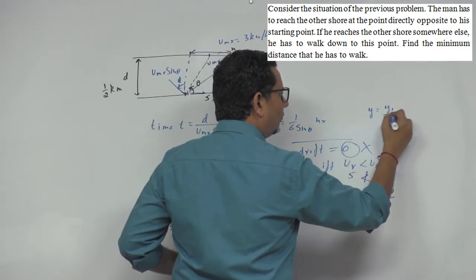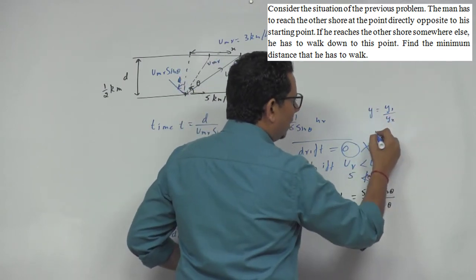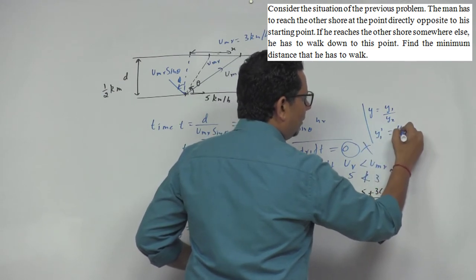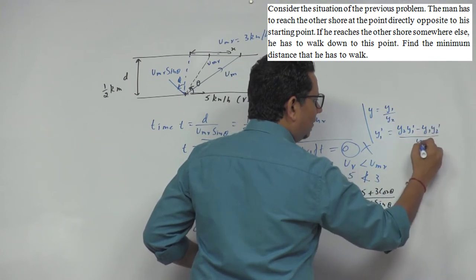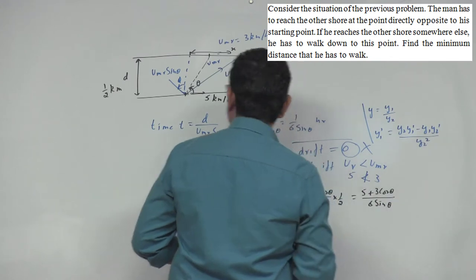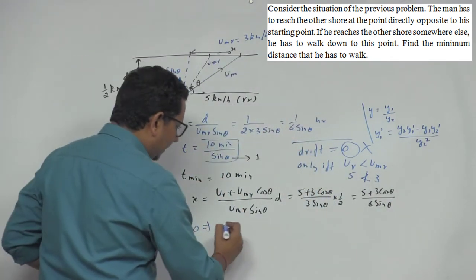We can use the quotient rule here. Let me revise the formula: if y equals y1 divided by y2, then y dash equals y2 times y1 dash minus y1 times y2 dash, all divided by y2 squared. This is the quotient rule formula.